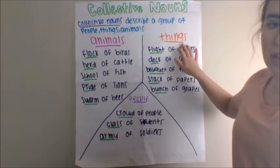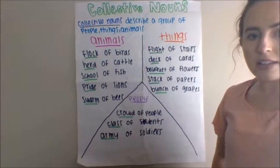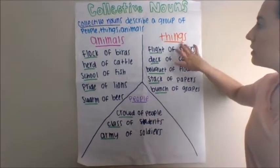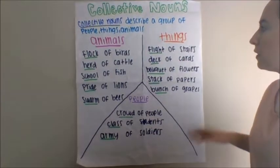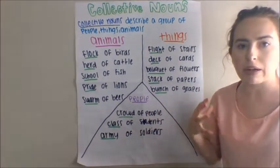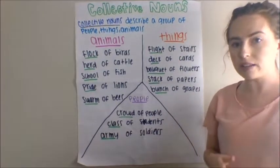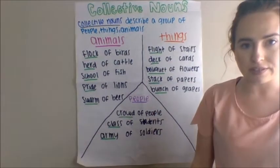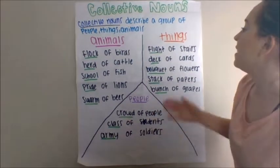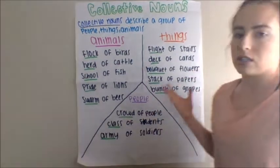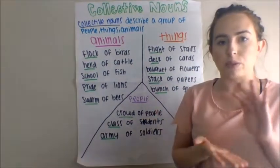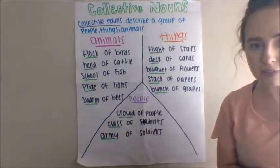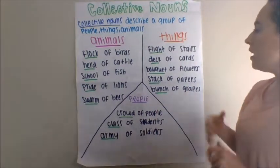The next group of collective nouns that I will talk about is things. So if you wanted to talk about a group of stairs, you'd call it a flight of stairs. If you wanted to talk about a group of cards, you'd call it a deck of cards.